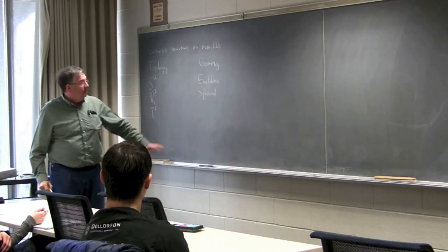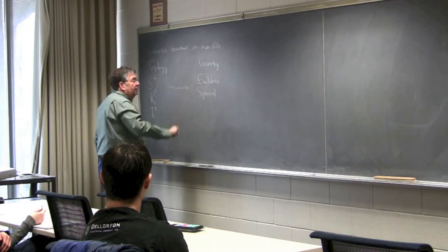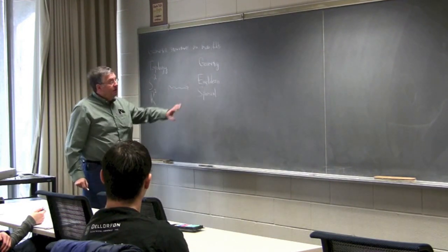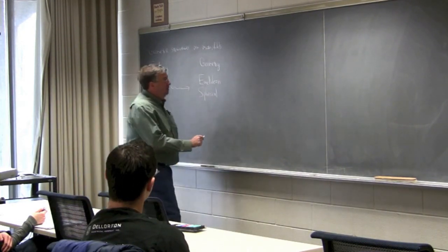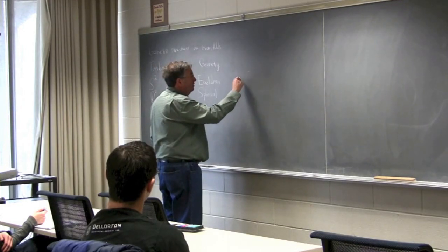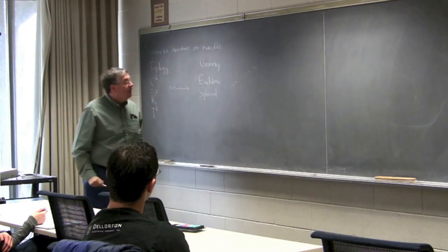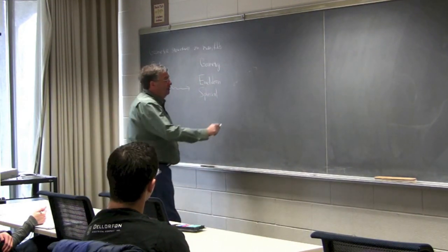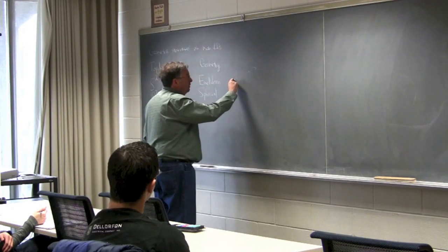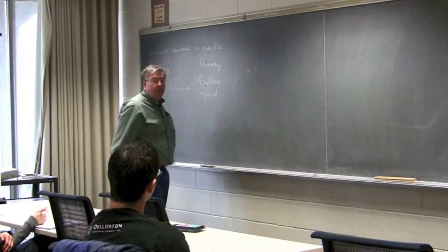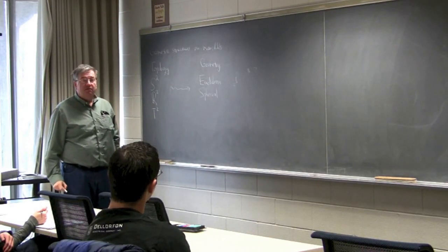So let me say a little bit more about what I mean by a geometry. The subject of Euclidean geometry discusses points. Given two points, there's a line segment between them. The line segment between them is the path of shortest distance, and we have a notion of distance between points. So if we have points P and Q, we know how to define the distance between them that makes it into a metric space.